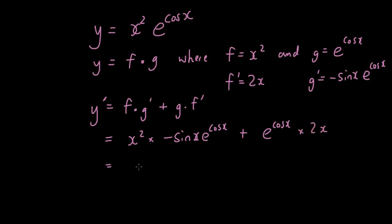Simplifying all of that, I then have negative x squared sine x times e cosine x plus 2x times e cosine x.